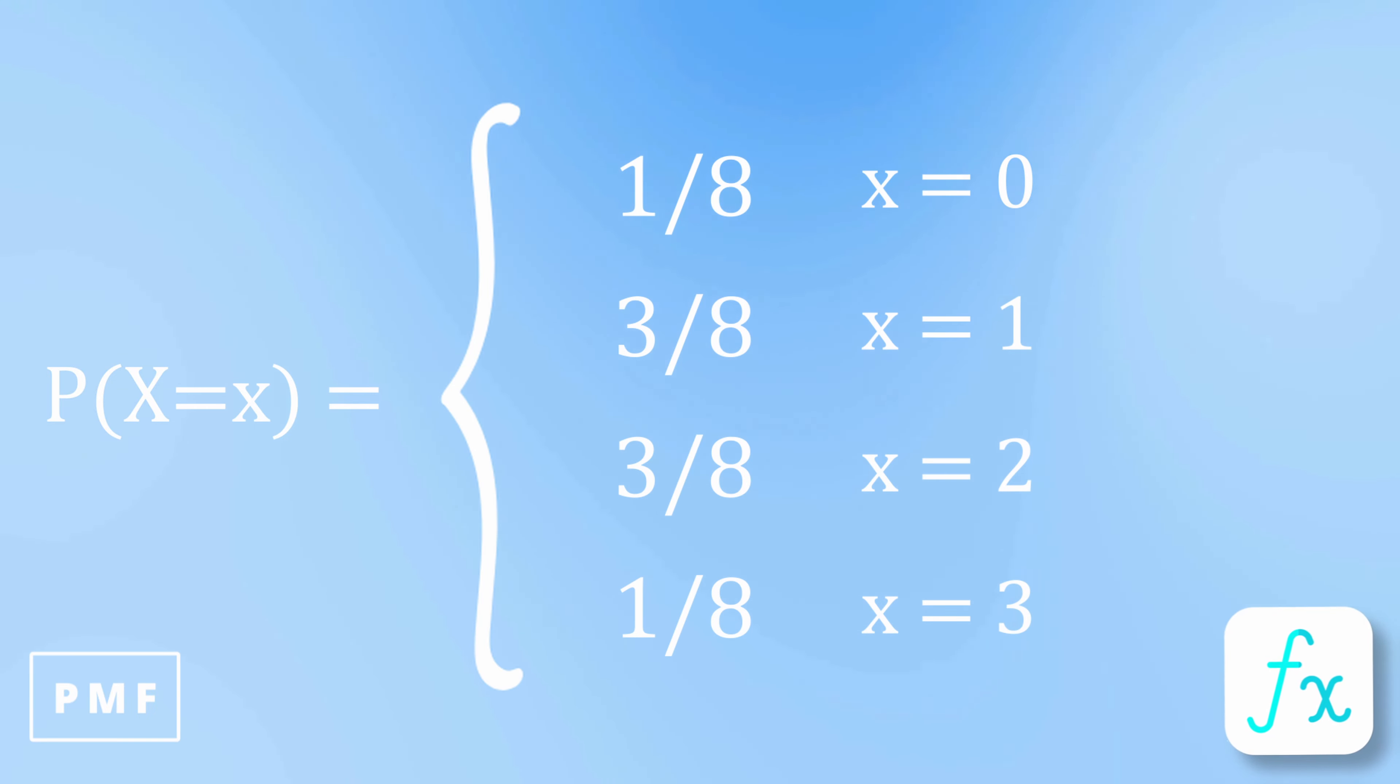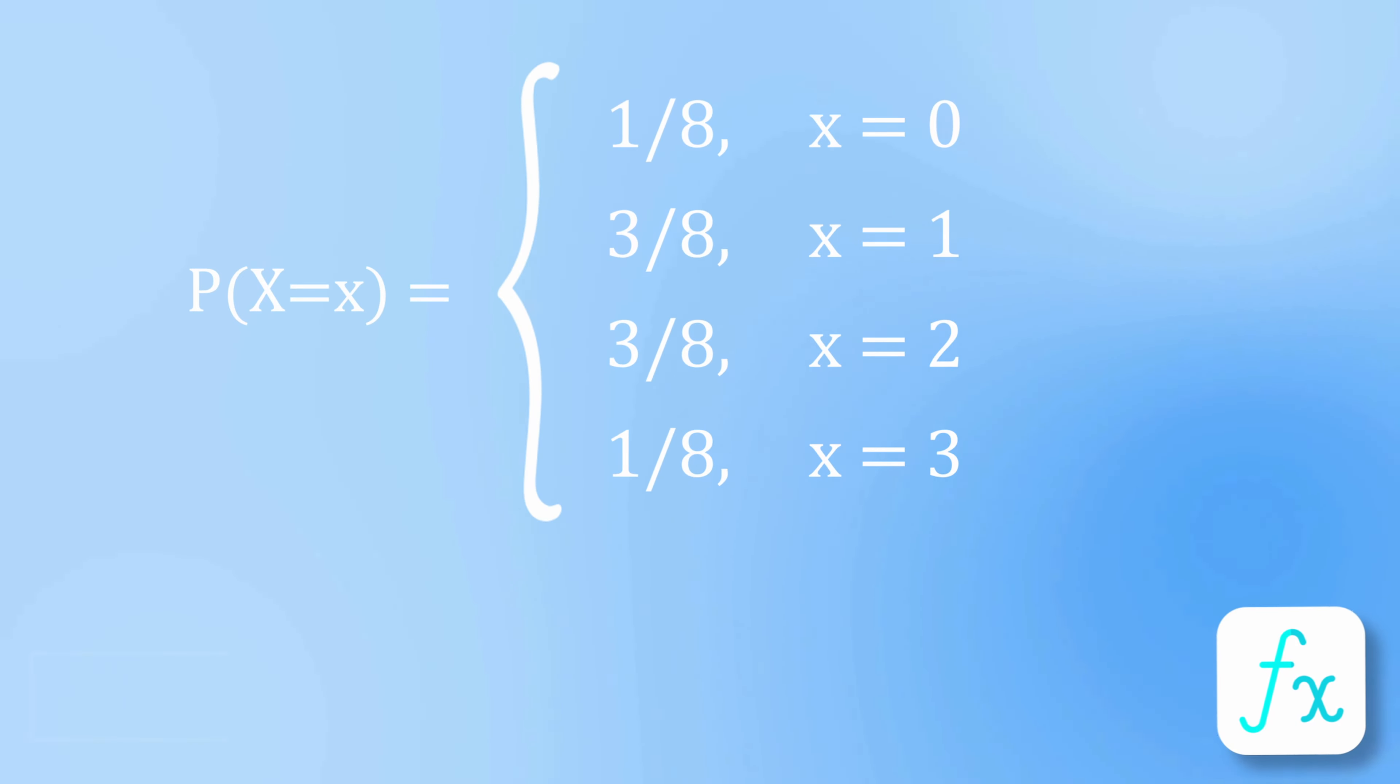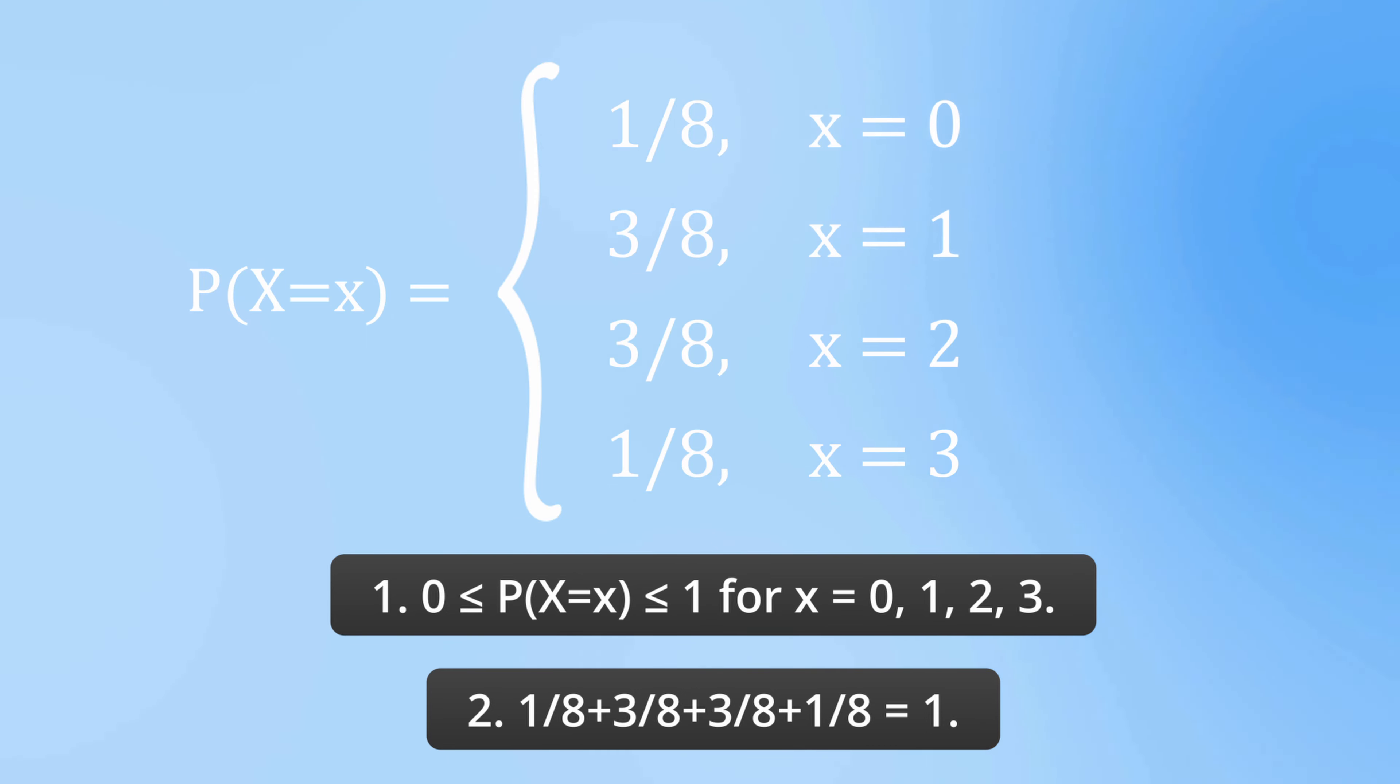To qualify as a PMF, two conditions have to be met. The first condition is that the probability of each outcome must range from 0 to 1. The second condition is that the sum of all probabilities totals 1. In this example, both conditions are met, so this is a valid PMF.